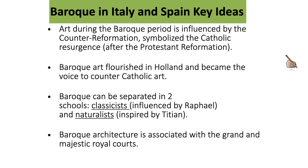During the Counter-Reformation, the Catholic Church was slow to respond systematically to the theological and publicity innovations of Luther and the other Reformers. The Council of Trent, which met off and on from 1545 through 1563, articulated the Church's answer to the problems that triggered the Reformation. Catholic Baroque art ultimately aimed to energize believers. Baroque art also flourished in Holland and became the voice to counter Catholic art. Baroque can be separated into two schools: the Classicist, influenced by Raphael, and the Naturalist, inspired by Titian. Baroque architecture is associated with the Grand and Majestic Royal Courts.